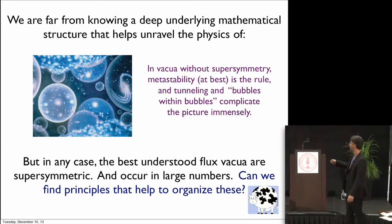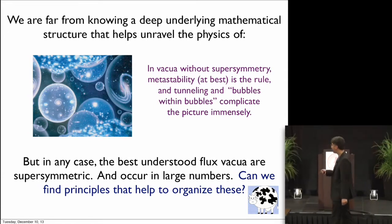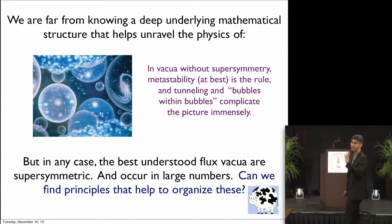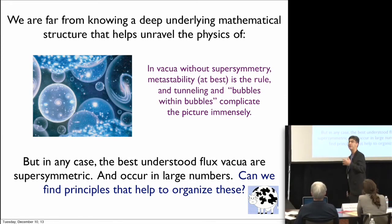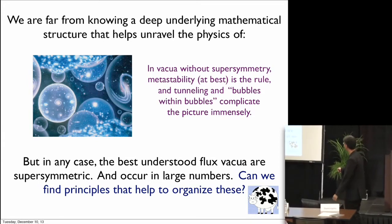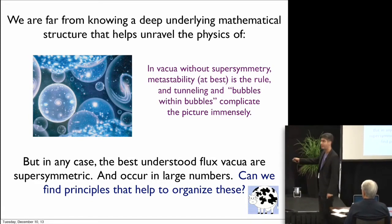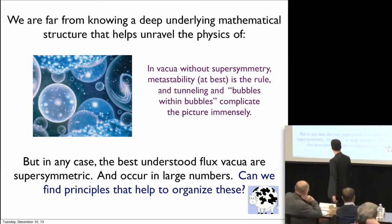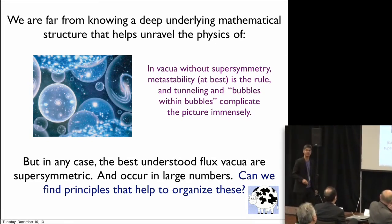In vacua without supersymmetry, metastability will be the rule, there will be tunneling, and so there's some picture like this. We don't have a precise mathematical formulation of this. I think it is a radically conservative picture — under some set of assumptions you're led here, so it's not something we don't have to think about. But I'd like to take a step back and ask: can we find some intermediate Goldilocks case where there's still rich mathematical structure that we can unearth? The best understood vacua intermediate between what we already understand and this complicated picture are flux vacua that happen to still be supersymmetric. These still occur in exponentially large numbers and can constitute a spherical cow for this problem. Can we find principles that help to organize these?